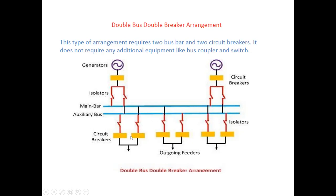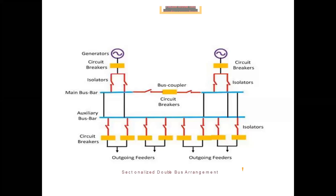With two bus bars and two circuit breakers, the cost increases. The double bus double breaker scheme is the most expensive method, as it uses two circuit breakers and two isolating switches per circuit. A sectionalized version using bus coupler circuit breakers also exists. If any fault occurs in one section, the circuit breaker trips, the isolator is opened for maintenance, and the outgoing feeders remain connected — maintaining continuity of power supply.